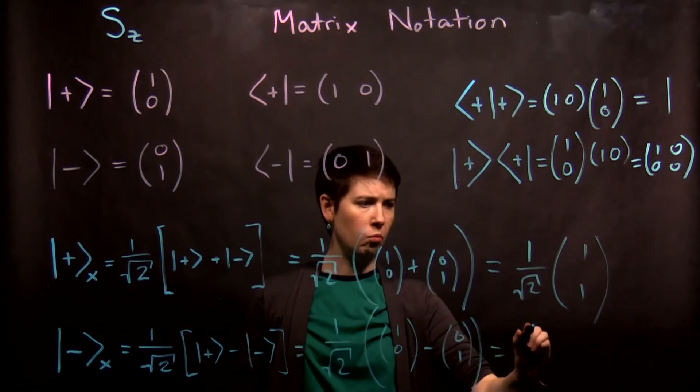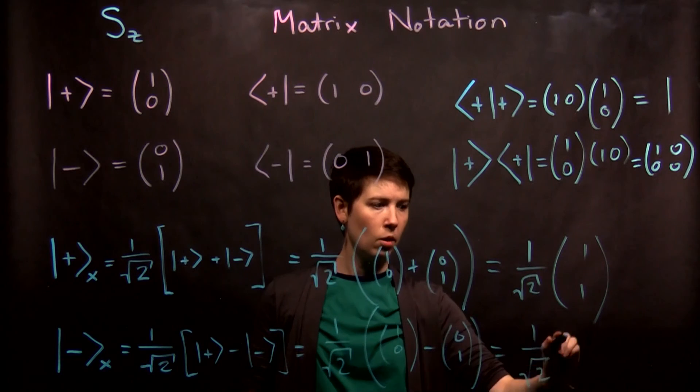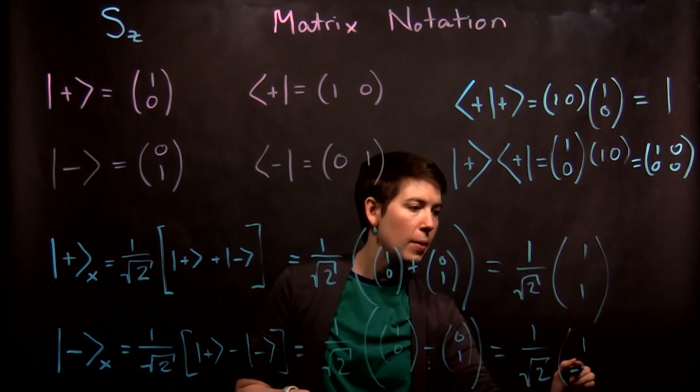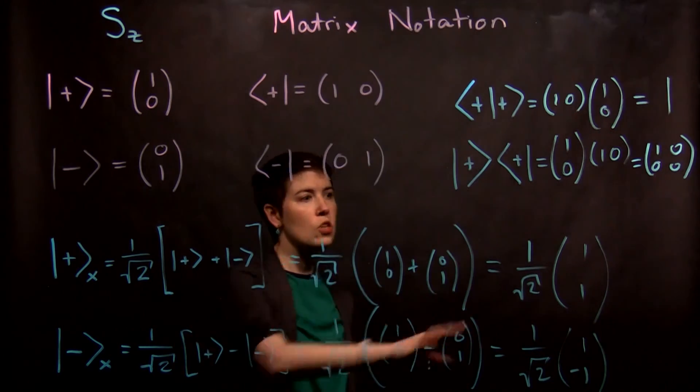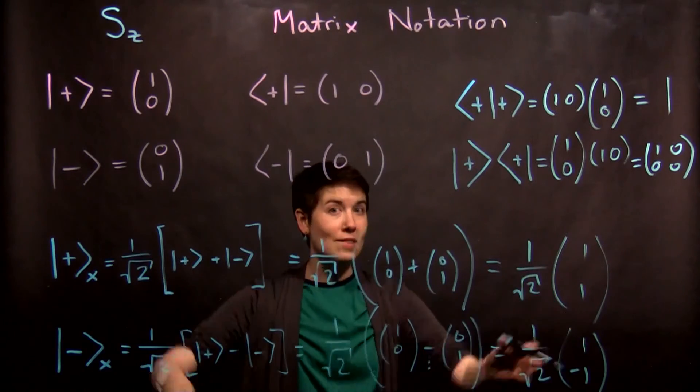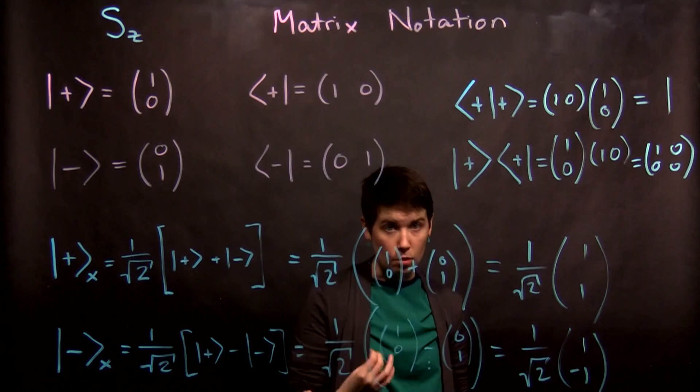And for the spin down, we have one over square root of two. And we then have one, and notice this here, minus one. So these are going to be our spin up and our spin down in the x direction states, when they're expressed in the z basis.